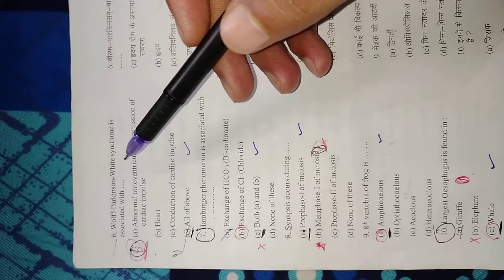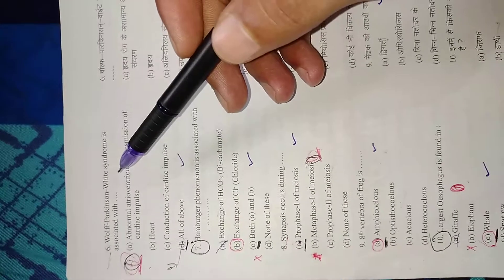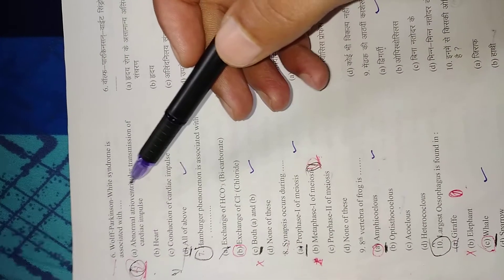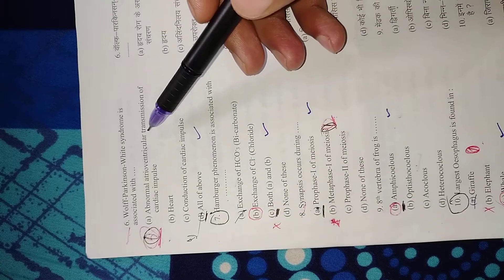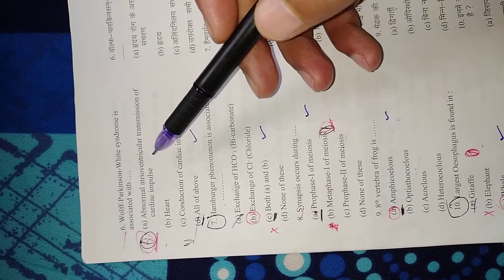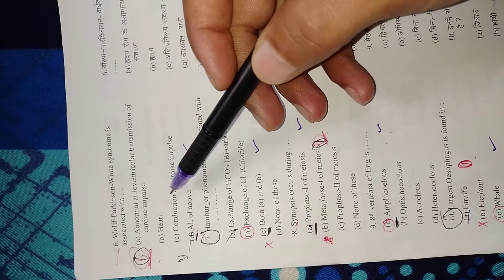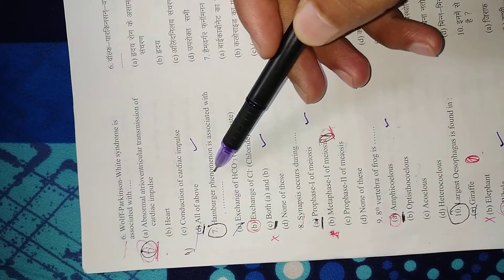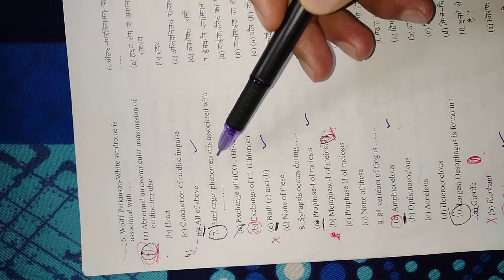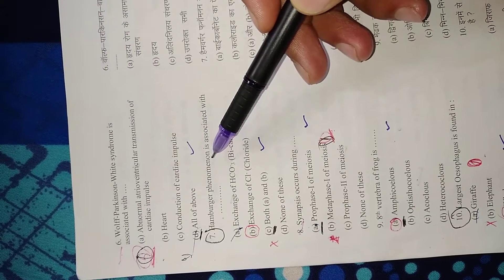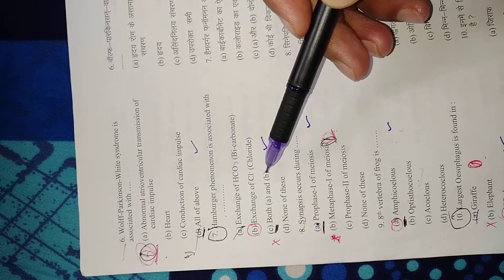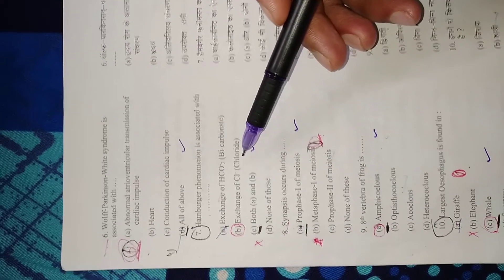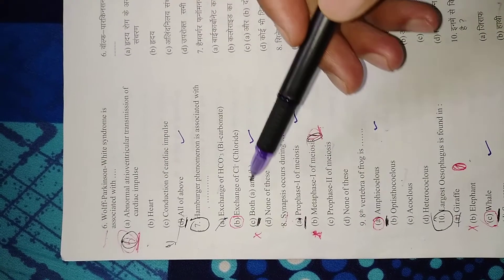Question 6: Wolf-Parkinson-White syndrome is associated with? It's a heart disease, irregularity in the conduction of nerve impulse. Right option is all of these. Question 7: Hamburger phenomenon is associated with? You've heard of chloride shift - it's the exchange of chloride and bicarbonate ions across the RBC membrane.